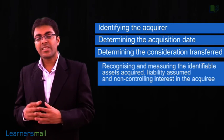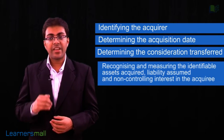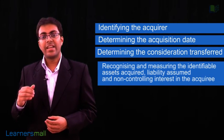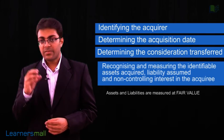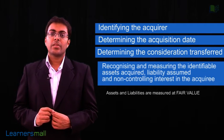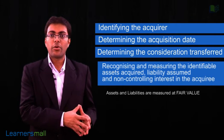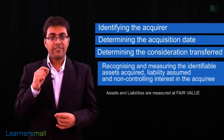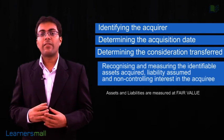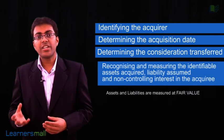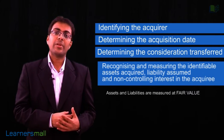How do we measure such assets and liabilities? All assets and liabilities are measured at fair value as at the date of acquisition. Regarding non-controlling interest — formerly called minority interest — it is measured at fair value, or the acquirer may show it as a proportionate share of the fair value of the acquired company's net identifiable assets.